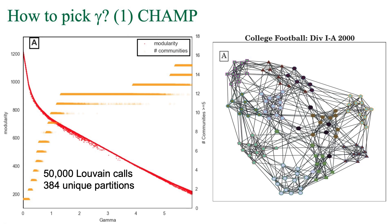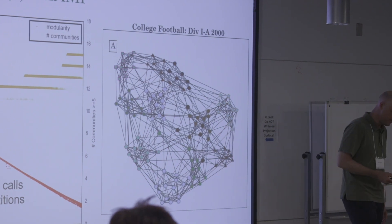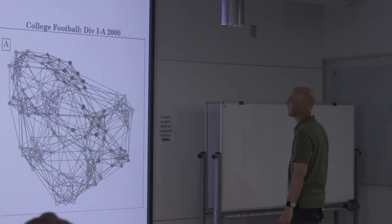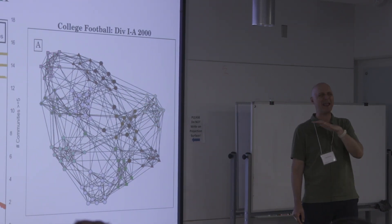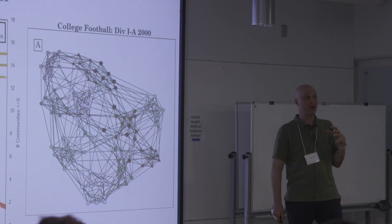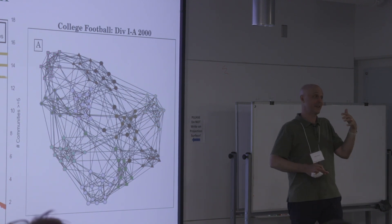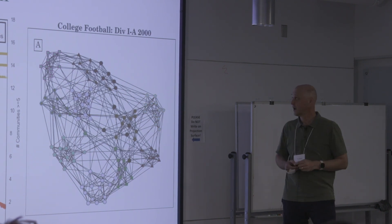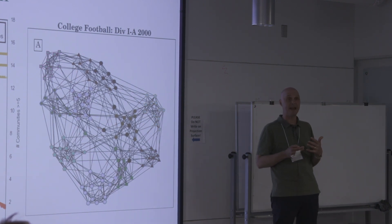The idea will be demonstrated on one of my other favorite community detection examples: college football. Duke may not be the school to talk a lot about college football, but we're going to do it anyway. The reason I like college football as an example is that if you know anything about college sports, you've heard words like the ACC, the Big Ten, and the SEC — the different conferences that Div 1 college sports are divided into. In college football, you play many more games within your conference than outside your conference, so this should be a very clustered network.